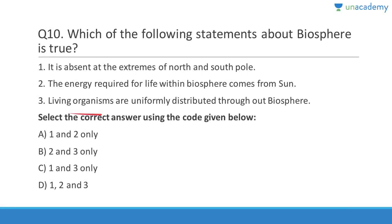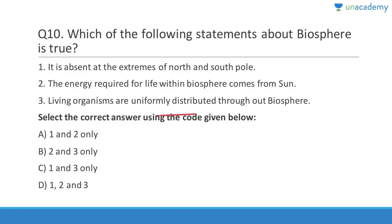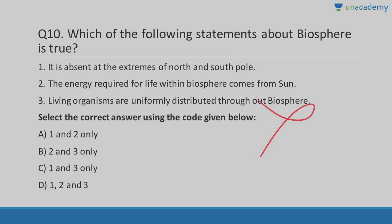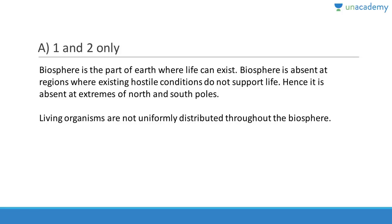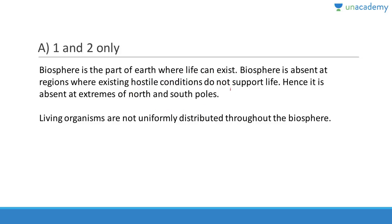Question 10: The biosphere is absent at the extremes of the north and south poles — that is correct. The energy required for life within the biosphere comes from the sun — that is also correct. Living organisms are uniformly distributed — that is wrong. The answer is A, 1 and 2. Biosphere is absent in regions where extreme hostile conditions do not support life, and living organisms are concentrated in the tropics and decrease as we go in either direction.